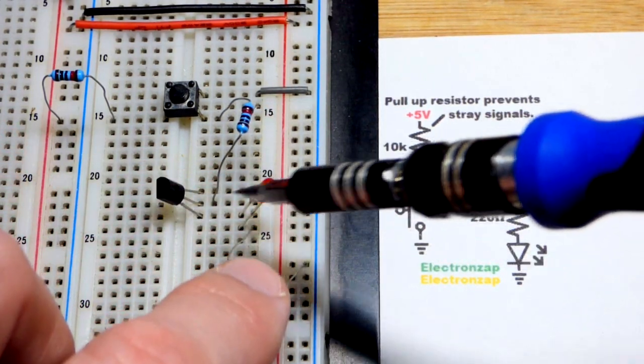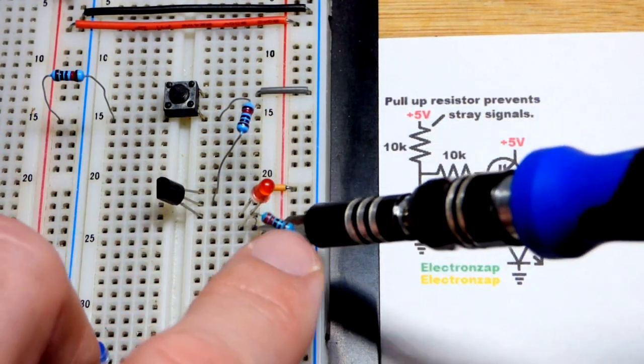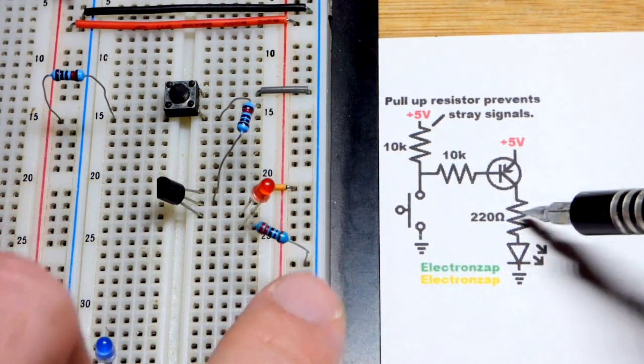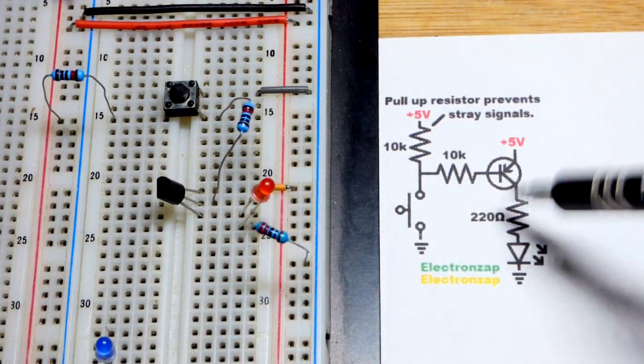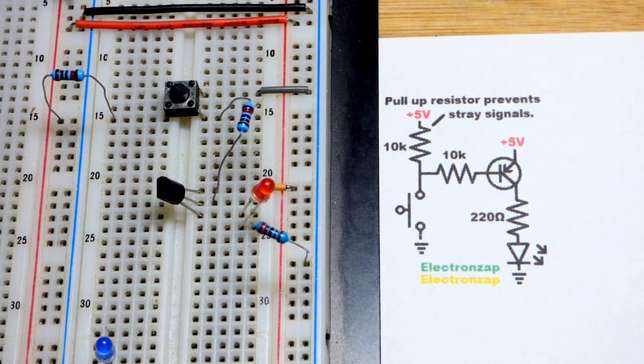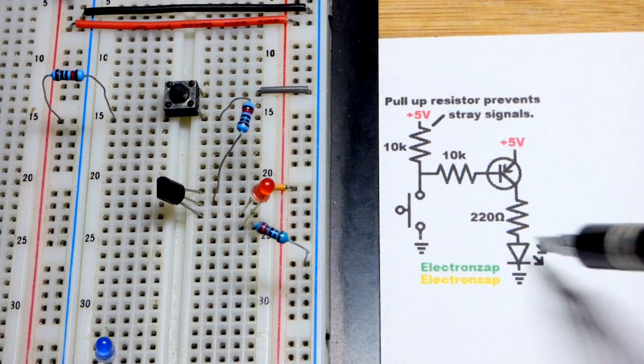That's the anode of the LED, short lead is the cathode, to the 220 ohm resistor. I have them in opposite order there but it doesn't matter, they're in series. The same current flows through them as long as the LED is in the right direction.